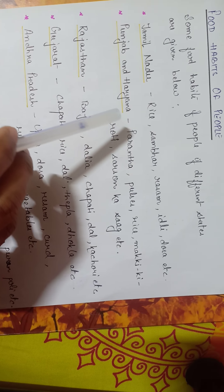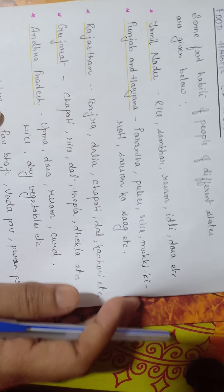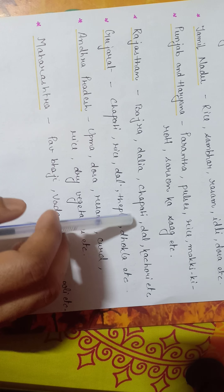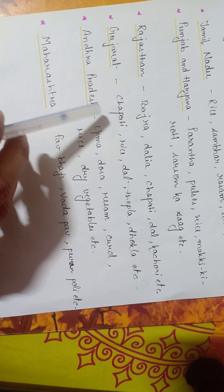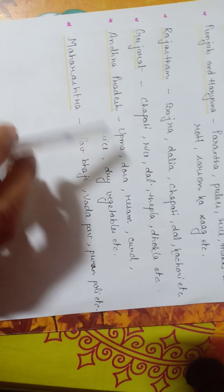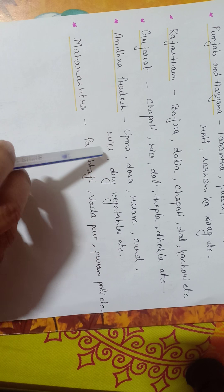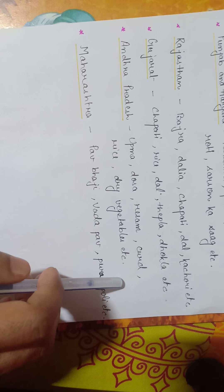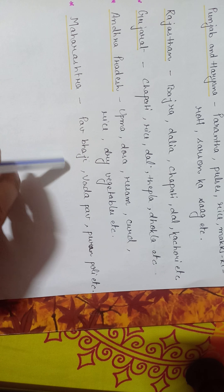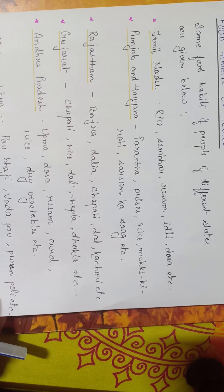In Punjab and Haryana, people prefer to eat paratha, pulses, rice, makke ki roti, and sarso ka saag. In Rajasthan, people eat bajra, dalia, chapati, dal, and kachori. In Gujarat, people eat chapati, rice, dal, thepla, dhokla, etc. In Andhra Pradesh, people prefer to eat upma, dosa, rasam, curd, rice, dry vegetables, etc. And in Maharashtra, people's food habits include pav bhaji, vada pav, puran poli, etc.